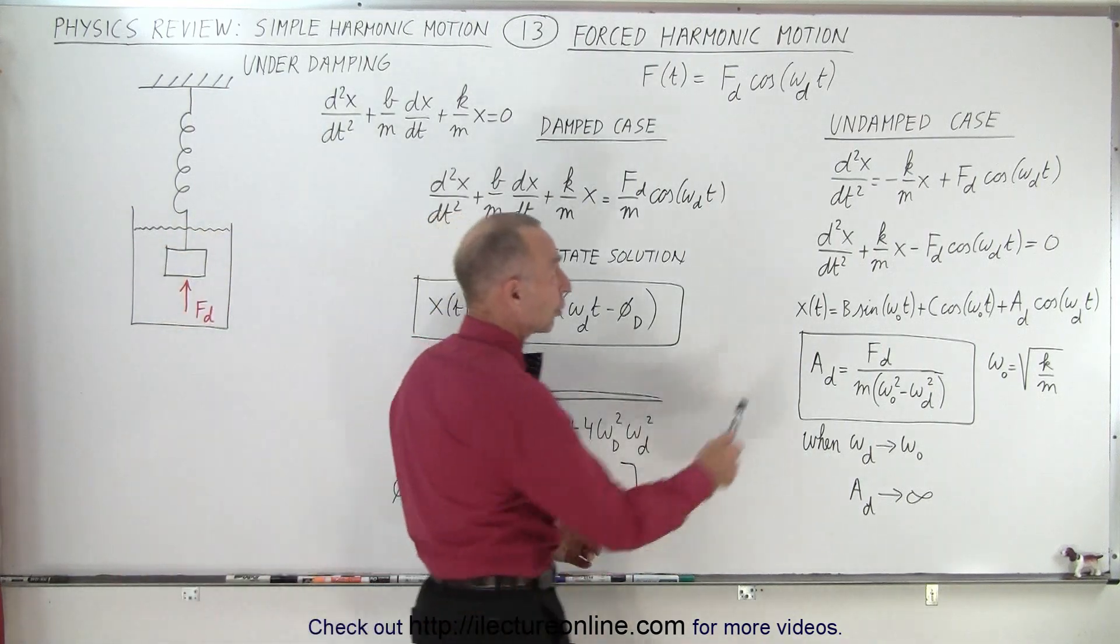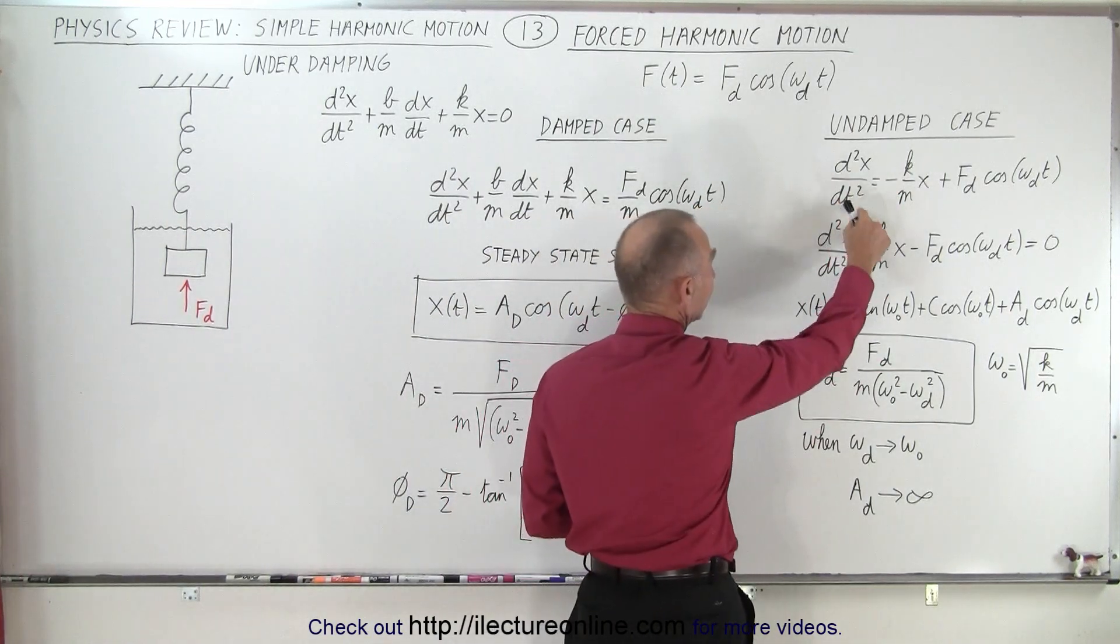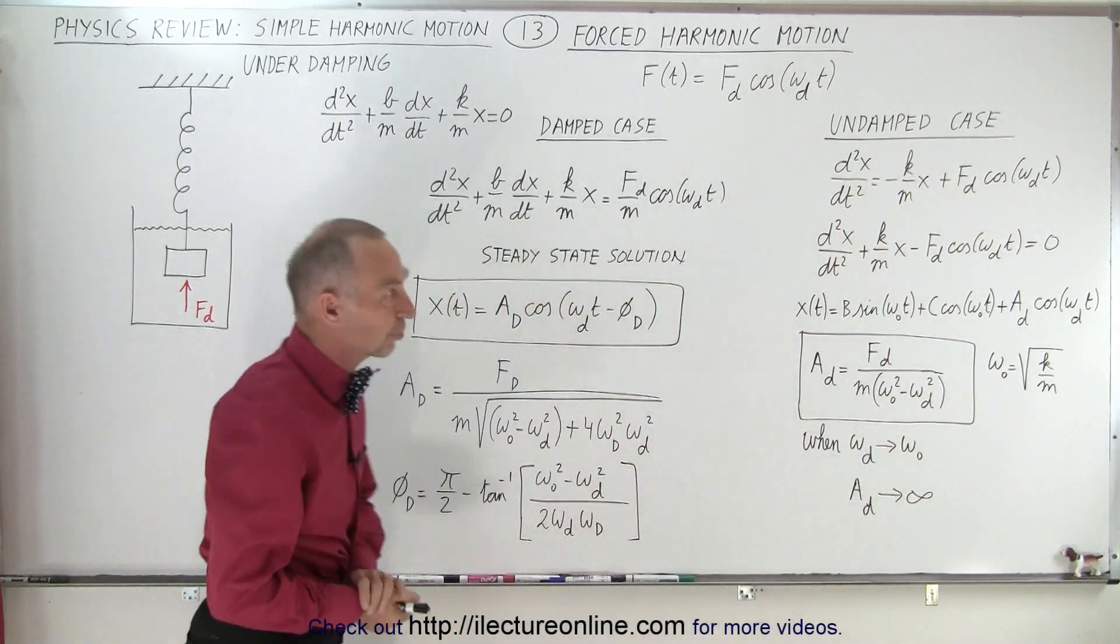So let's look at the undamped case first. We can say that d squared x dt squared equals minus k over m times x plus the driving force.